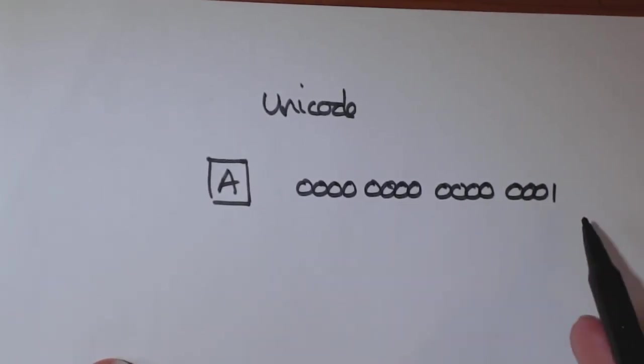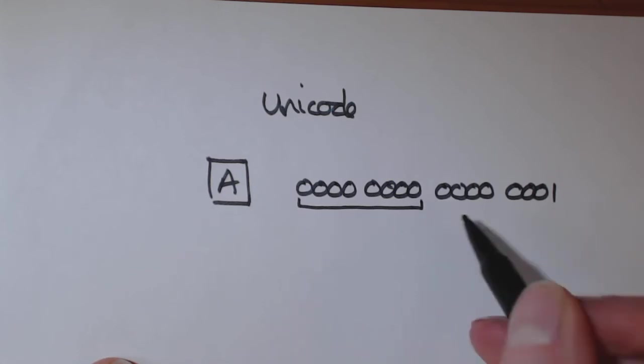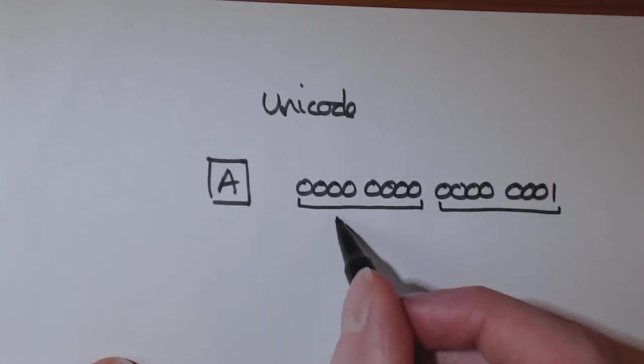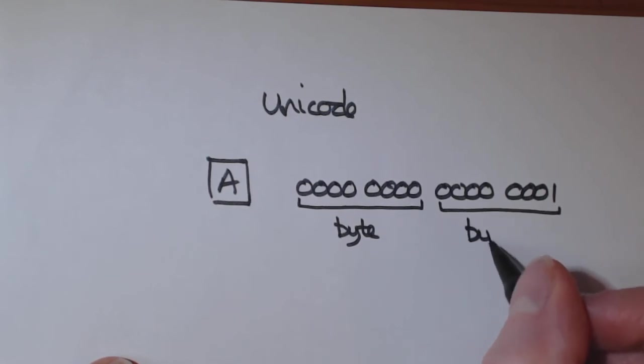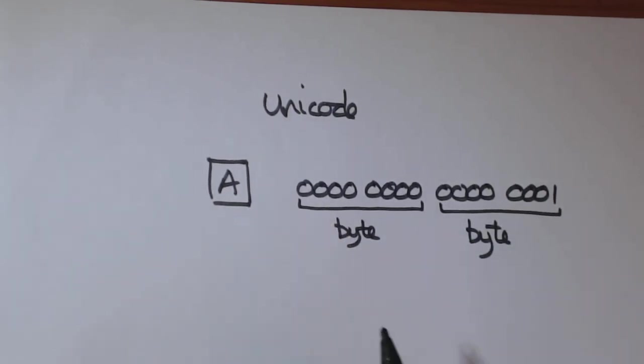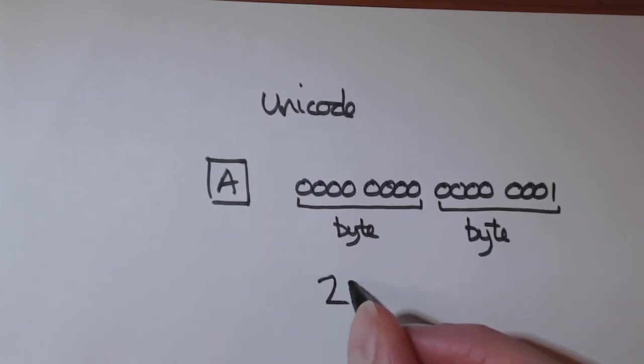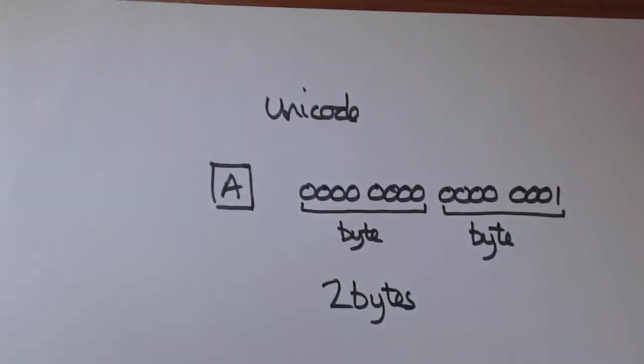So it sends 16 bits. Now, we can actually bunch them together. Because that's a byte. And that's a byte. So, with Unicode, when you press it, each character has got 2 bytes of information.